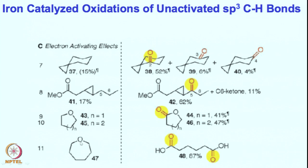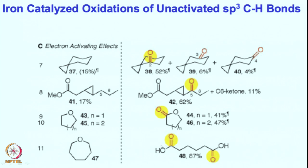Similarly, the alpha carbon centers adjacent to the oxygen atom are going to be reactive — both of them undergo ketone formation. The ester formation and subsequent ester hydrolysis ring opening gives rise to a dicarboxylic acid product, and this is the major and essentially the only product that forms in these cases.